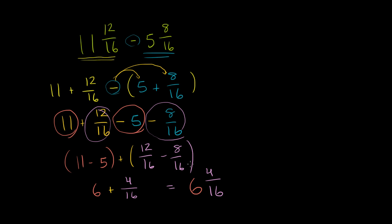So let's divide both the numerator and the denominator by 4. Since we're dividing by the same thing, we're not changing its quantity. And so this is equal to—we still have the whole number part, 6—but the fraction part is now 1 over 4. So we get 6 and 1 fourth.